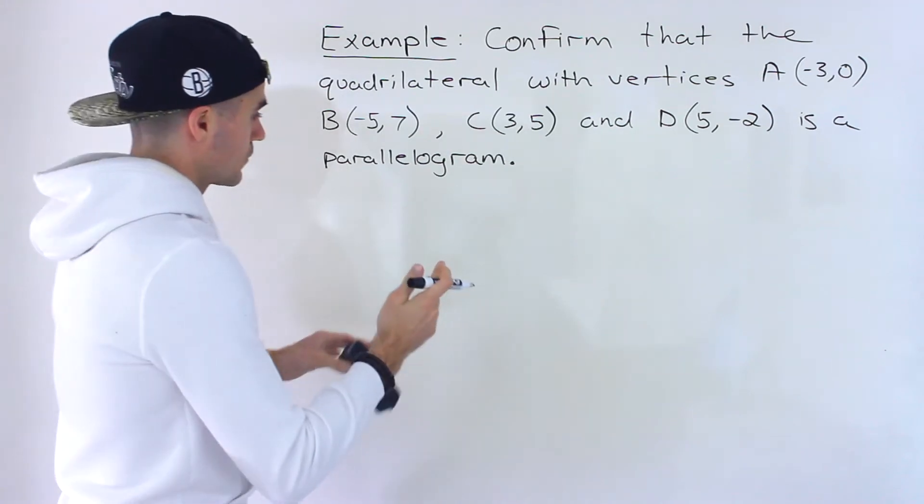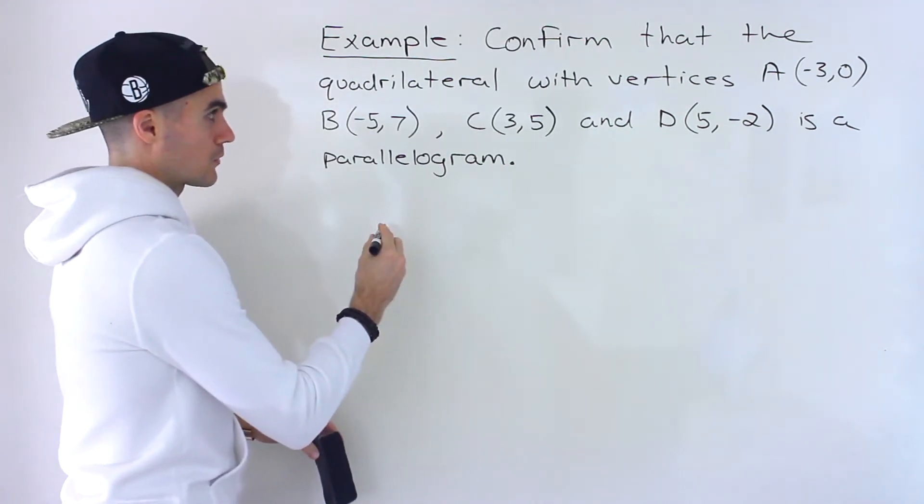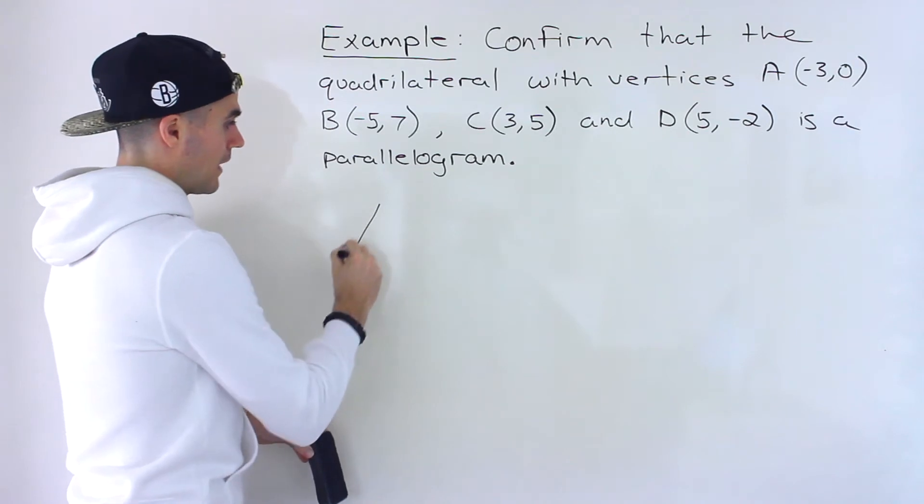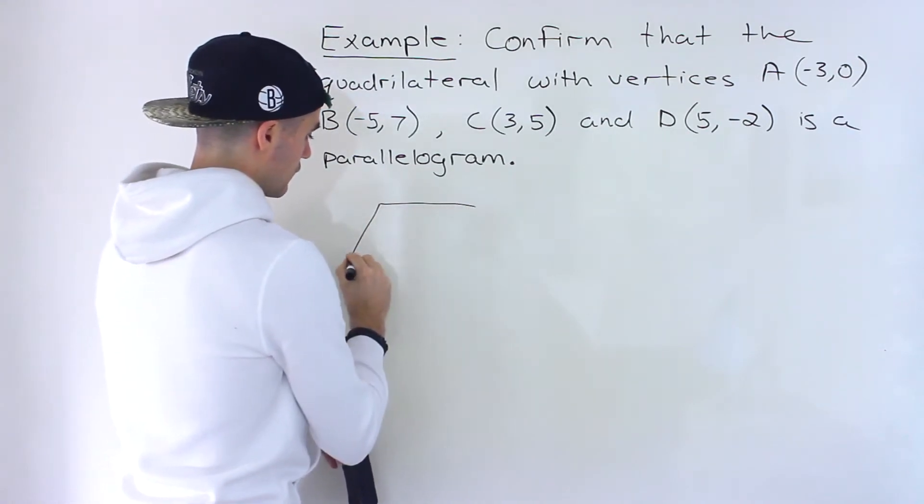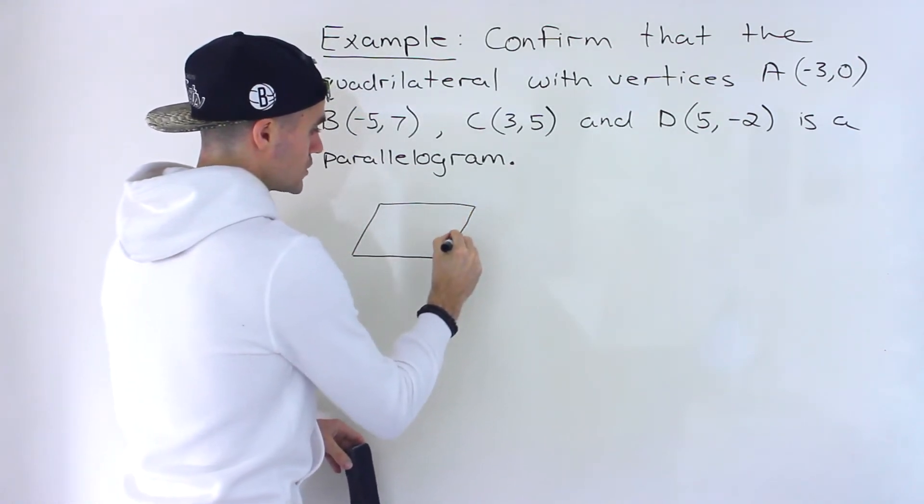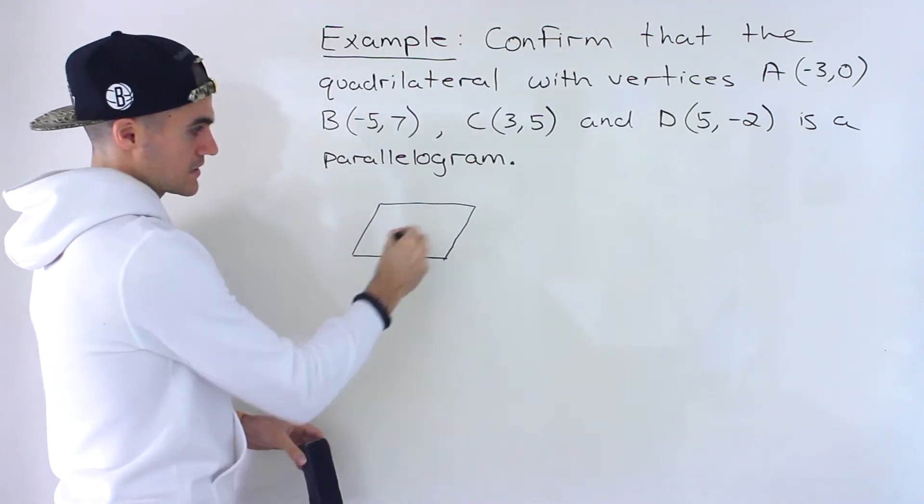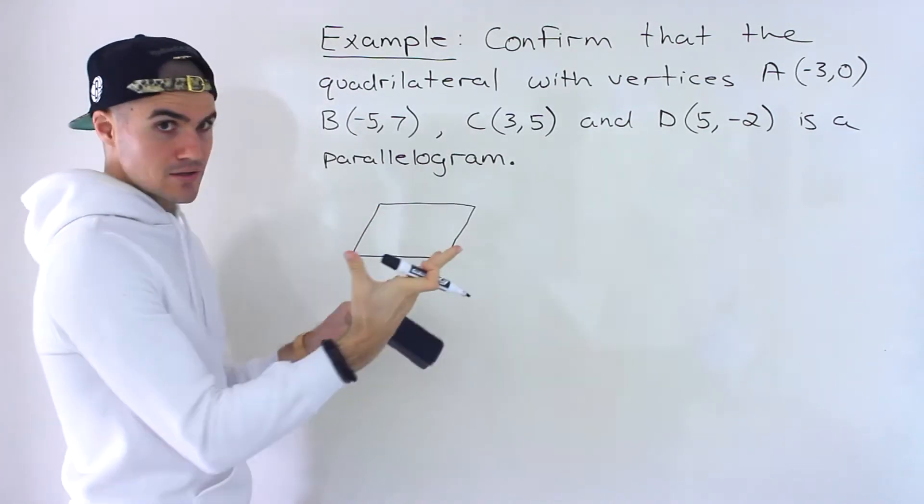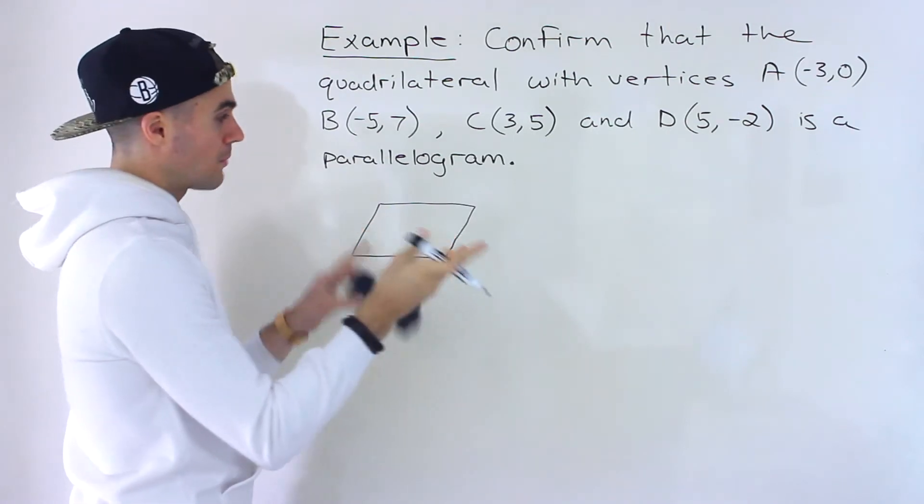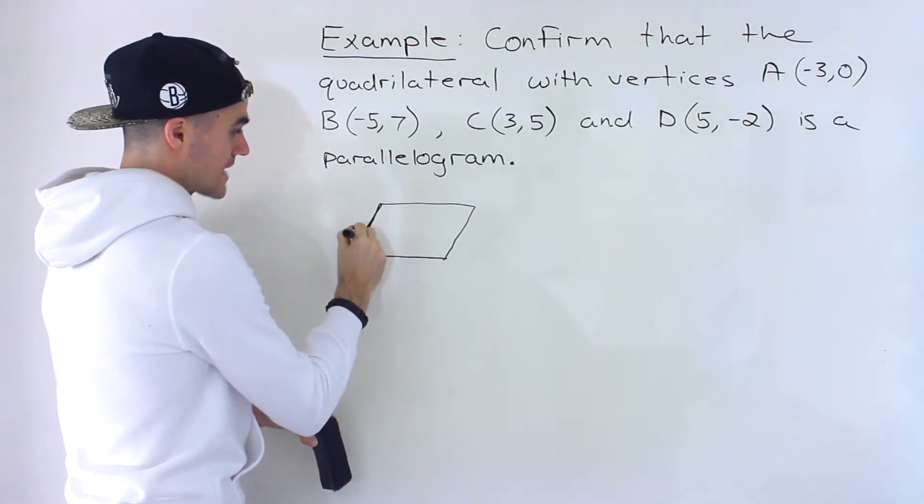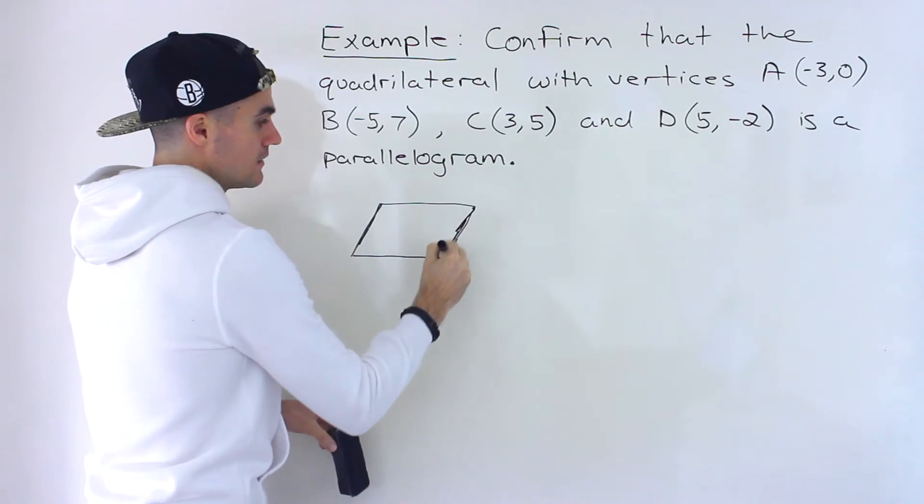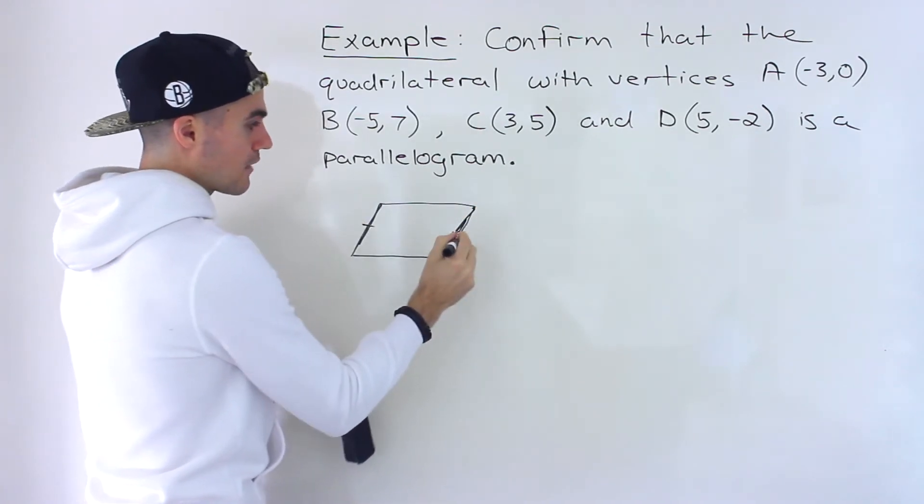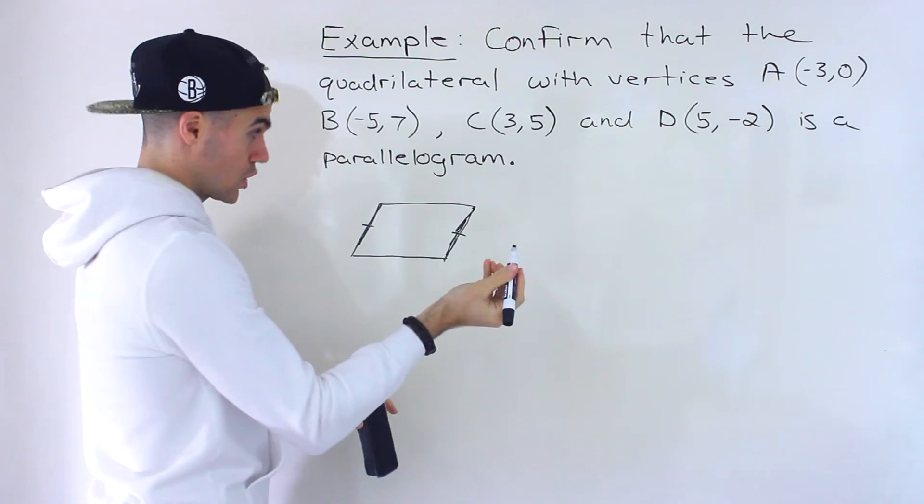To do a quick review, just to show you visually what we're going to do. A parallelogram, if you remember, the way we show that something is a parallelogram is by showing that the two pairs of sides are parallel, so that this side and this side are parallel, so that they have the same slope.